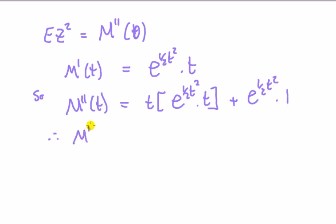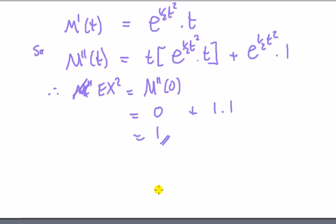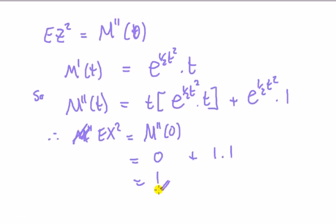Therefore second moment E(z²), which is equal to the second derivative evaluated at 0: plug in t=0, that whole thing goes to 0 because 0 times something finite is 0, plus e^0 here is 1 times 1 equals 1.